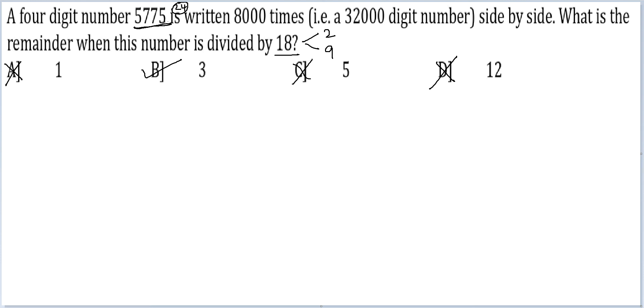But if options are not available, for the sum of the digits, if you want remainder with 9, with 2 you are getting a remainder 1. With 9, if you want remainder, you would want sum of digits. So 24 into 8000 divided by 9 is what you are dealing with. Here I will get 6.